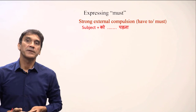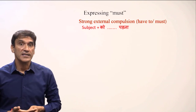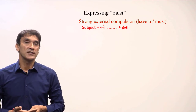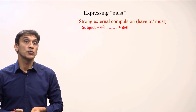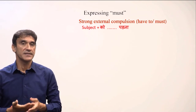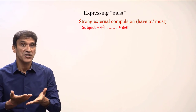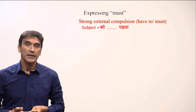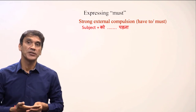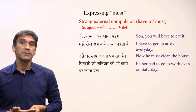There is another type of compulsion — a strong external compulsion — expressed with the verb parna. Just like the other compulsion constructions, the subject goes with the postposition ko, and parna is the verb that expresses the compulsion. You need to have another verb to show what action is being compelled. The verb parna is conjugated — that means it changes for gender, number, and tense.